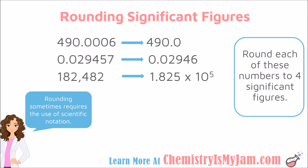A lot of times when you are doing math with significant figures, you have to round your answer. I want to provide a few examples of rounding significant figures. We are going to take each of these numbers on the left and round them to four significant figures. Starting on the left-hand side and keeping four digits: I keep the 4, the 9, the 0, and this 0. Rounded to four significant figures, the number looks like 490.0. I need to keep this 0 after the decimal place because it is significant — that scientist made that measurement to that degree of accuracy.